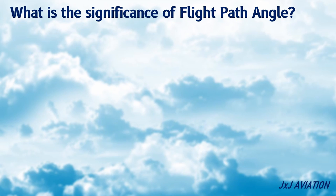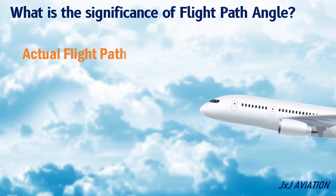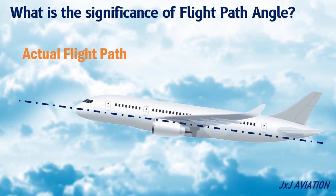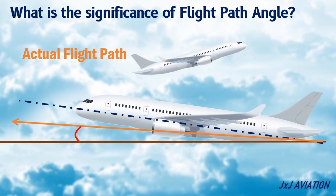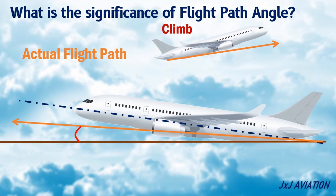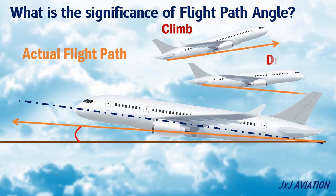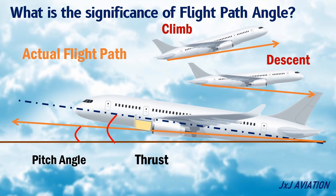What is the significance of the flight path angle? The flight path angle is the actual flight path, which means it represents the actual climb or descent angle for an aircraft. The pitch angle, the thrust produced, and the relative winds have an impact on the flight path angle.